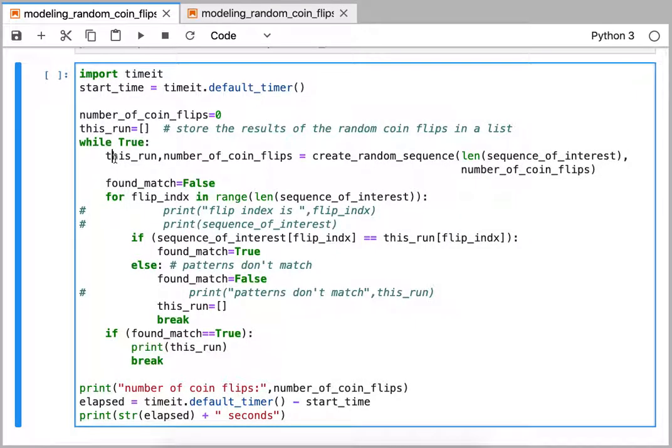The function that I'm going to call is create_random_sequence, that's basically doing the coin flip. I'm going to keep track of both how long it is and the total number of coin flips I've done so far.